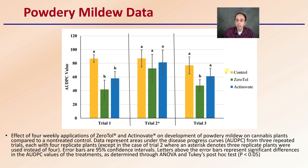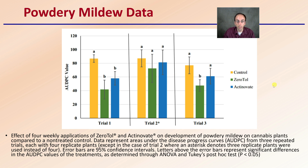Here's the data looking at the control — basically an unsprayed control — Zerotol, which is essentially a hydrogen peroxide-based natural fungicide and bactericide, and then Actinovate, to see how it compares. Overall, the trends show that the control had the highest disease levels as expected, Zerotol had the lowest levels, and Actinovate fell somewhere in between — sometimes not statistically different, sometimes statistically different.